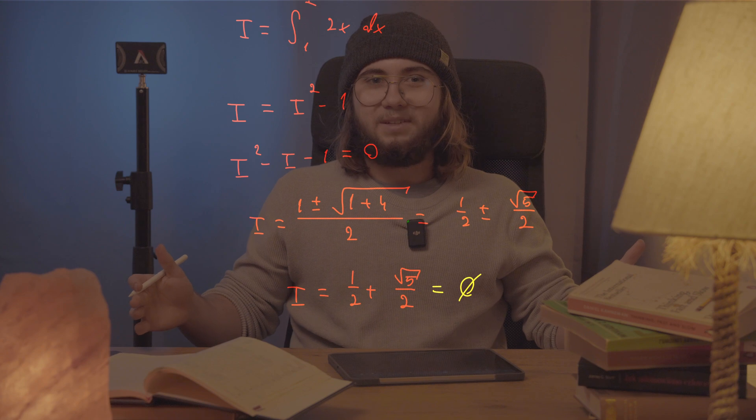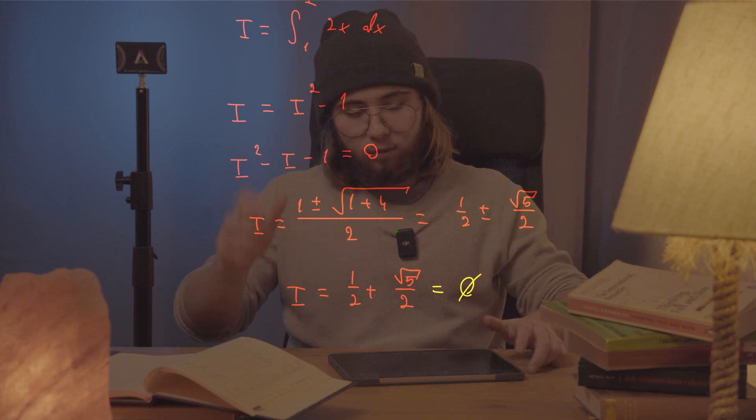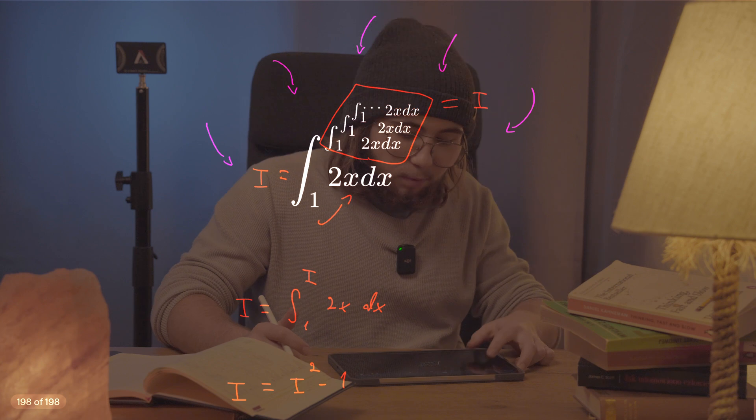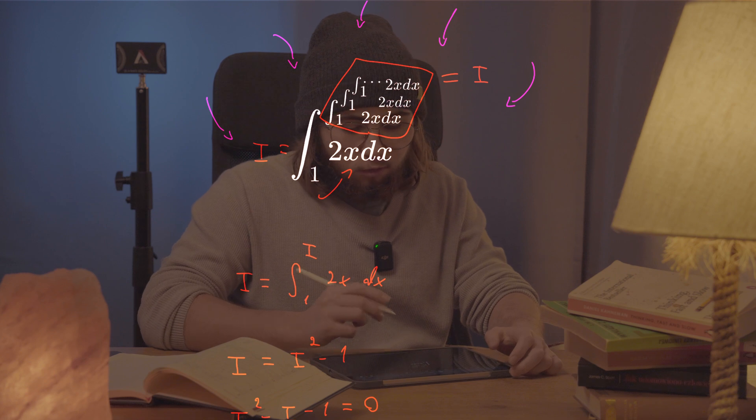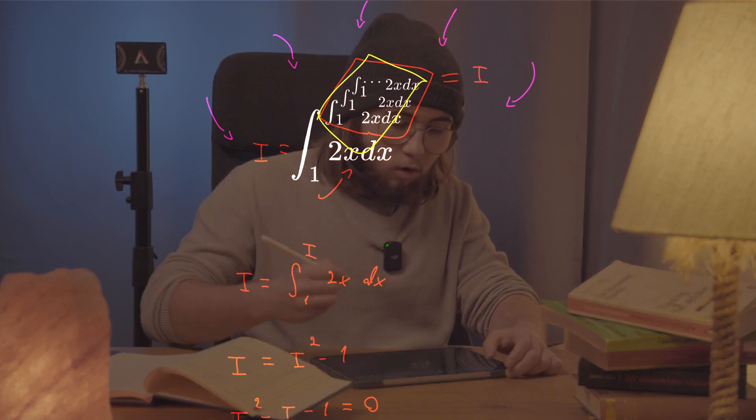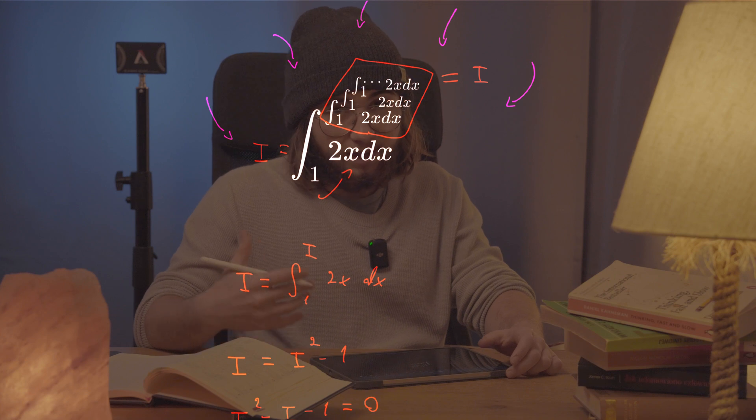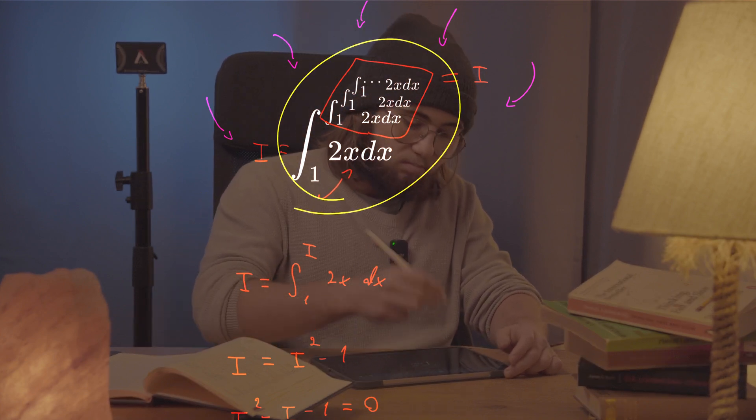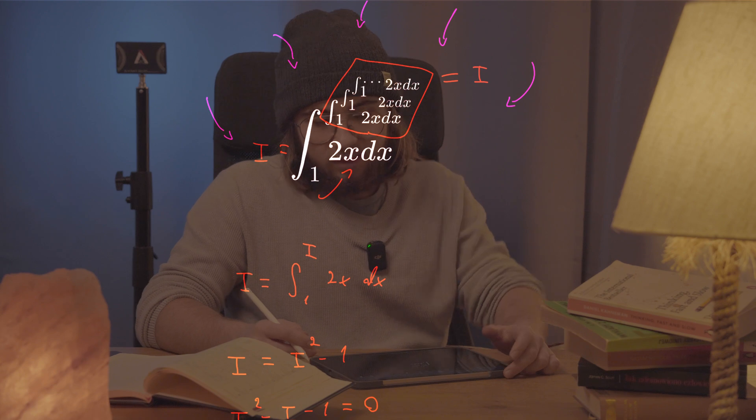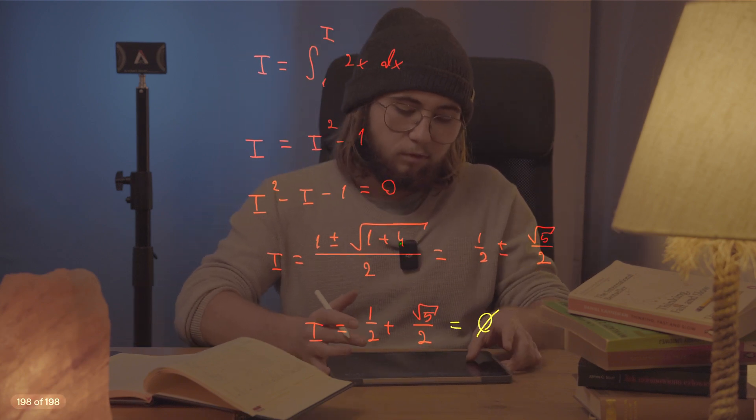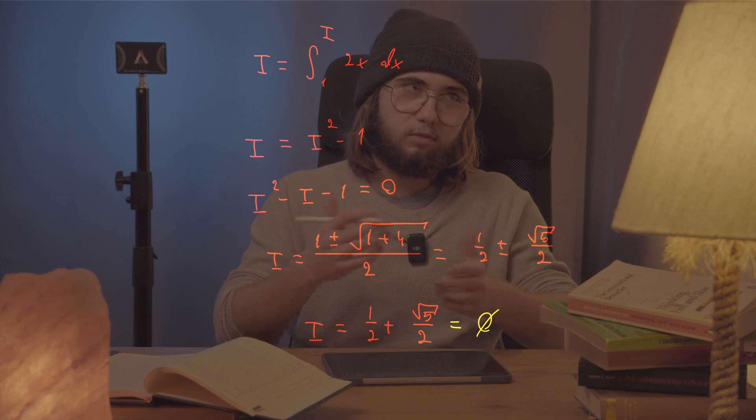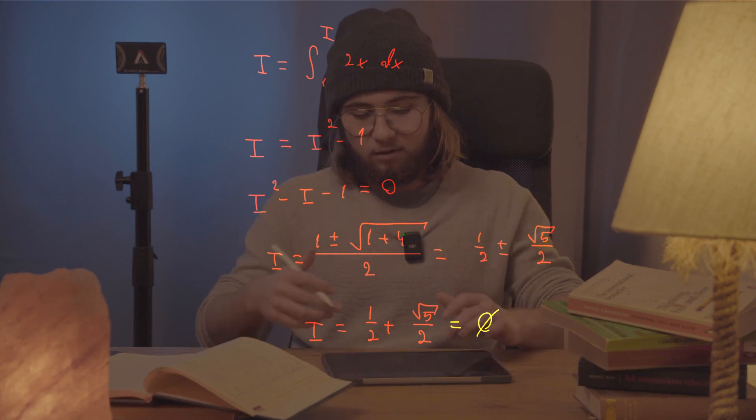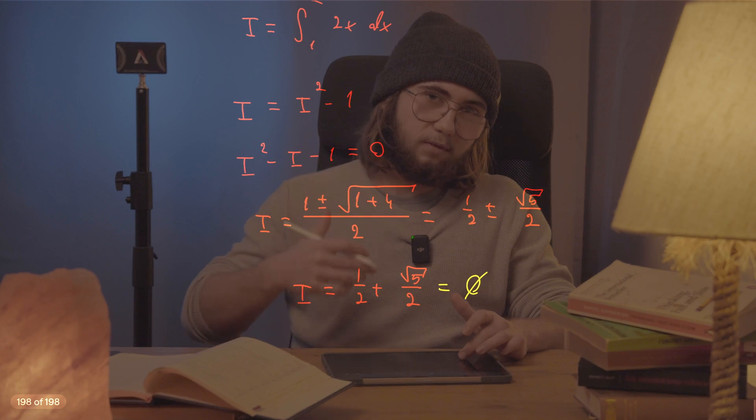So let's go over what we did here once again. We're supposed to evaluate this infinite tower of integrals, so we just went on and denoted the entire tower itself as I, and then just said that I was equal to the integral from one up to I itself of 2x with respect to x. Got the quadratic equation with respect to I out of it, and got that I was equal to a half plus the square root of five over two,